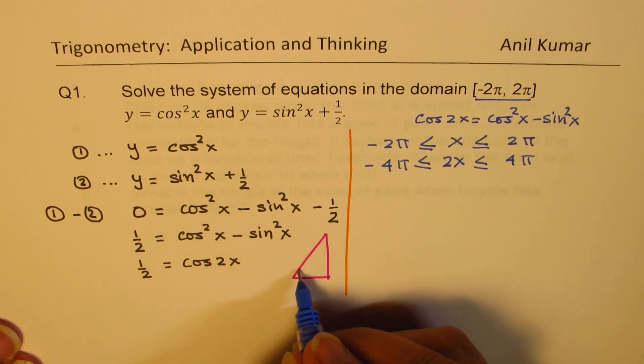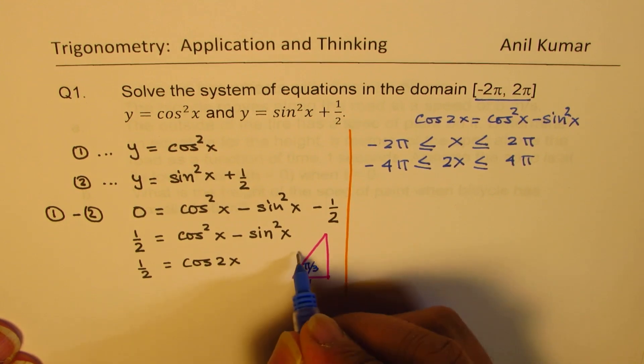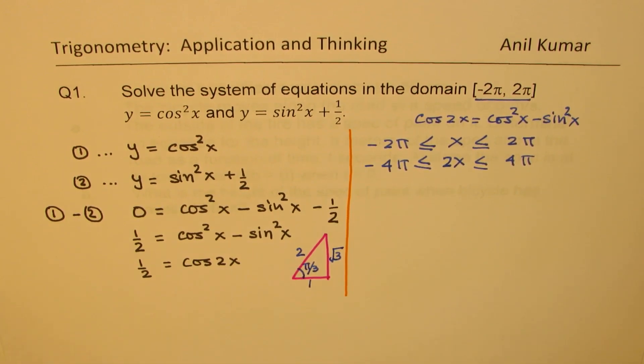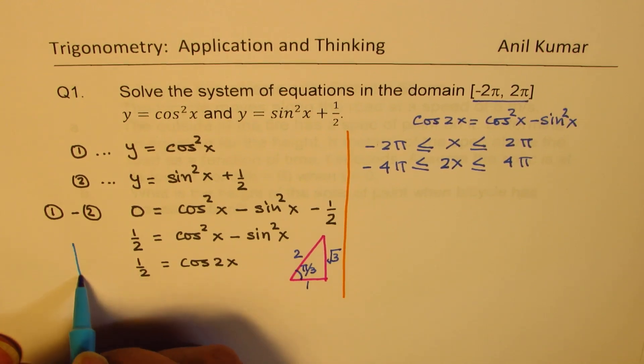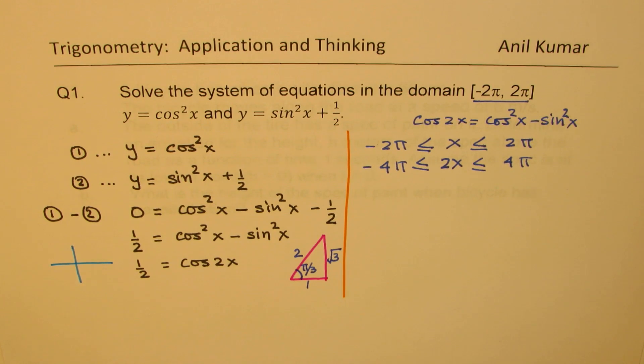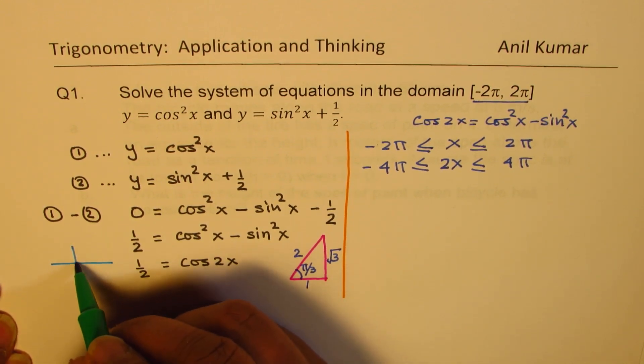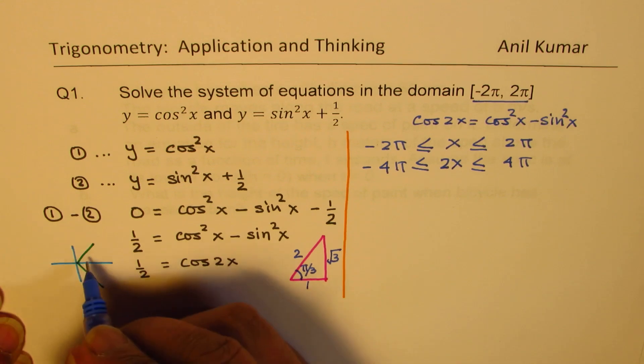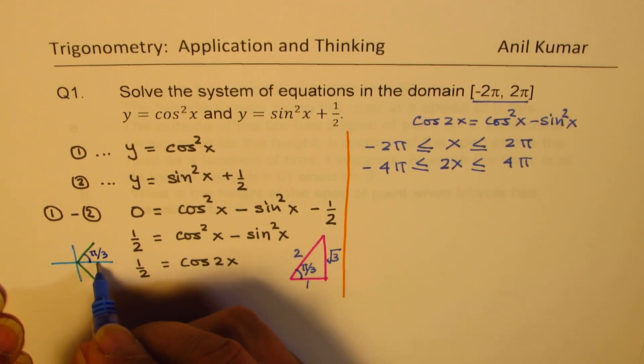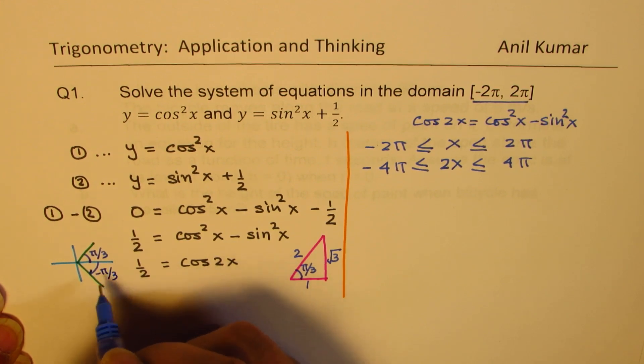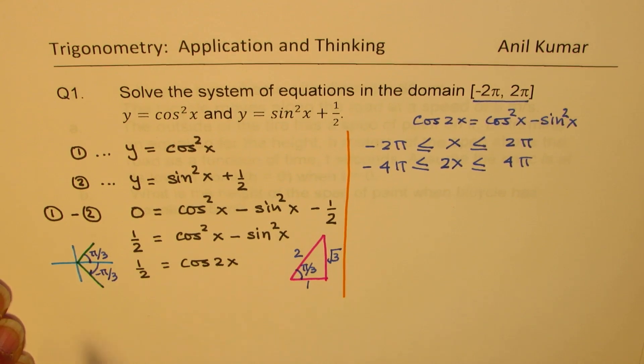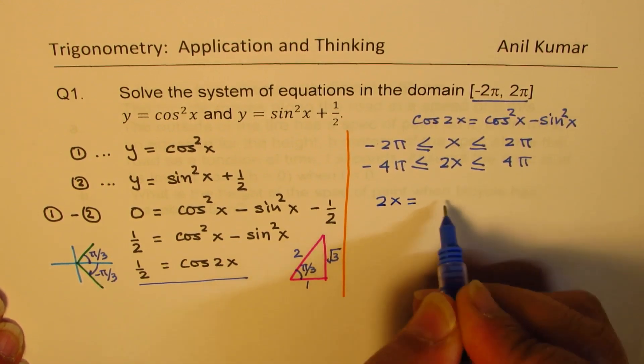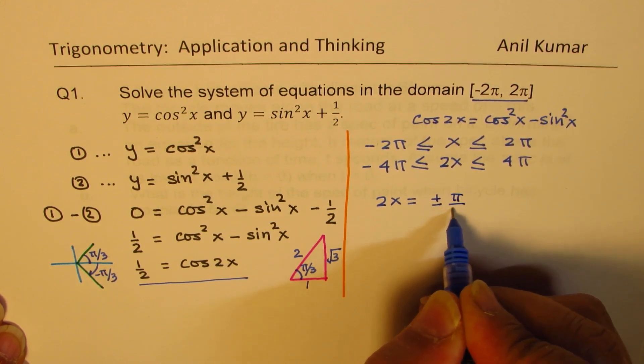So we have to work in radians in this case. If this angle is π by 3, we know these sides are 1, 2, and square root 3. That means we have the solution of cos 2x being positive half in two quadrants: quadrant 1 and quadrant 4. The value of 2x is going to be either π by 3 or minus π by 3, plus and minus π by 3. What we get from here is that 2x should be equal to plus minus π by 3.